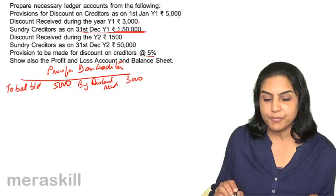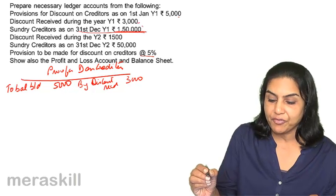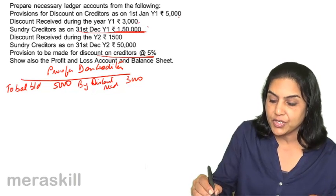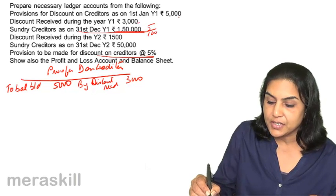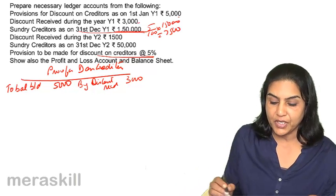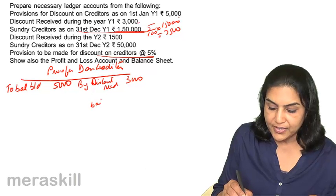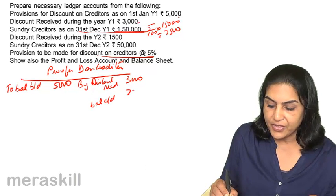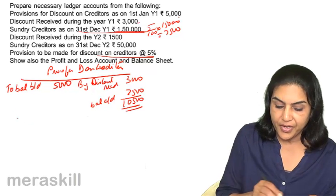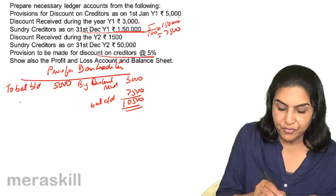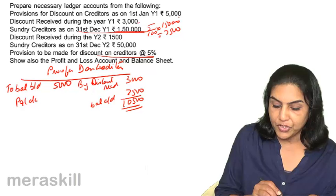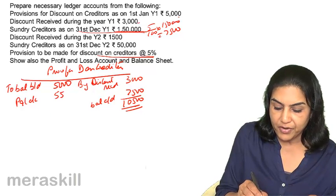What is the closing balance supposed to be? Since creditors are 150,000 and provision is to be made at the rate of 5%, five percent on 150,000 gives us 7500, which should be the closing balance. Balance carried down would be 7500, therefore we get 10,500, and the difference of 5500 is what is taken to the profit and loss account.